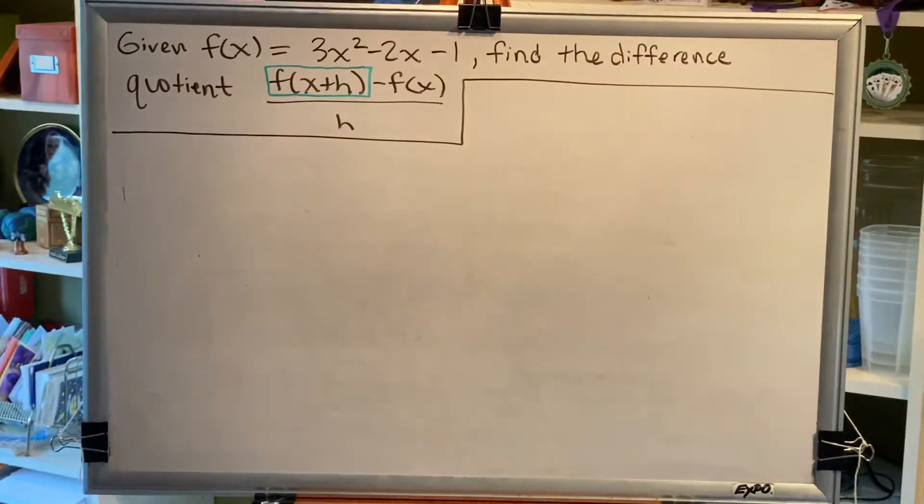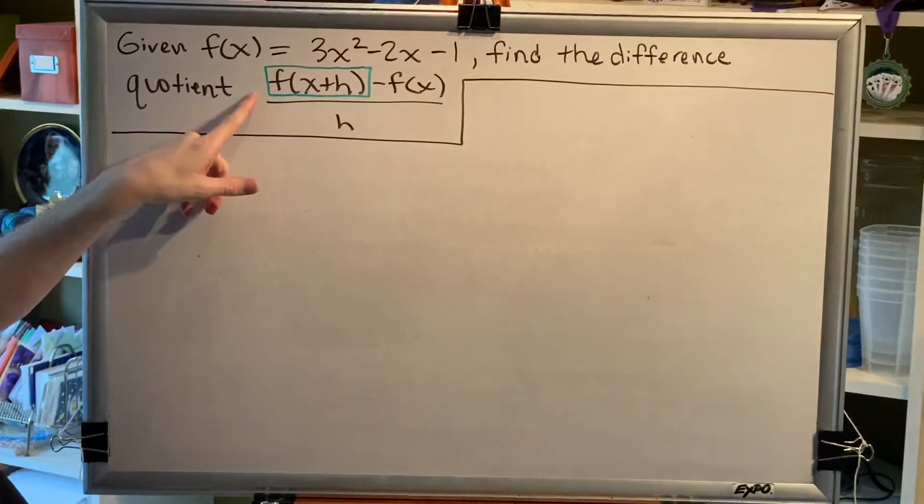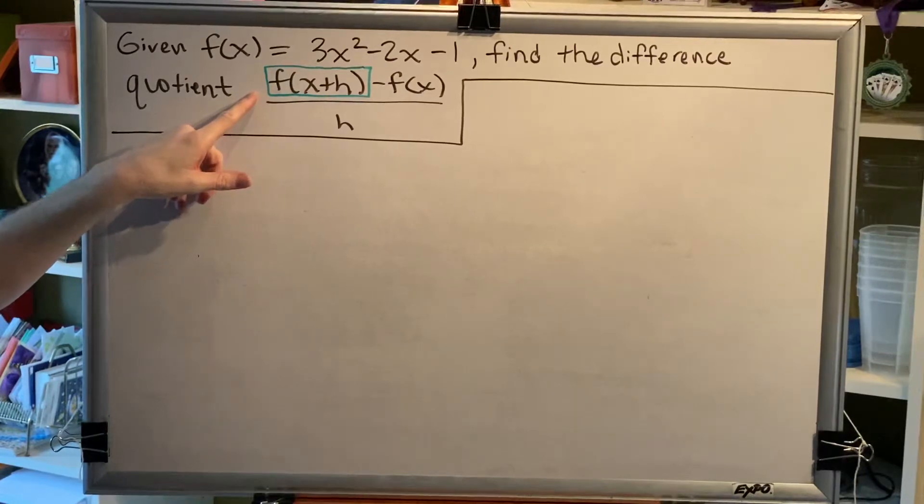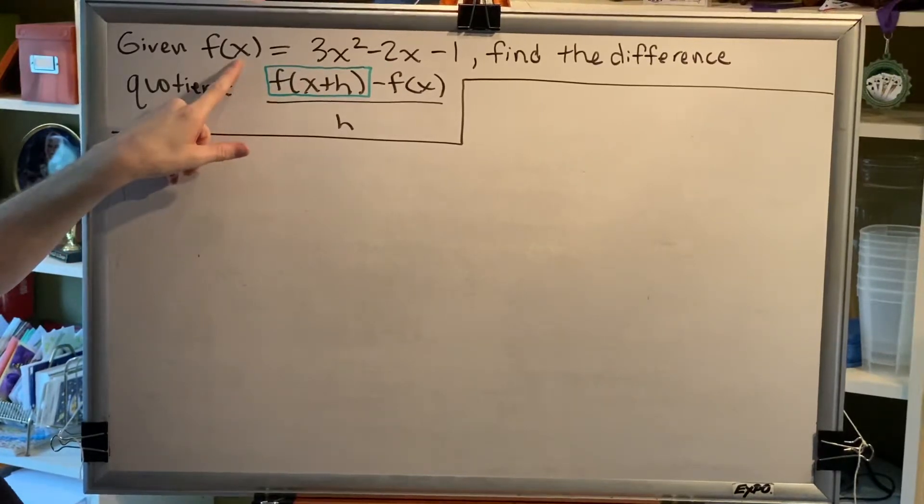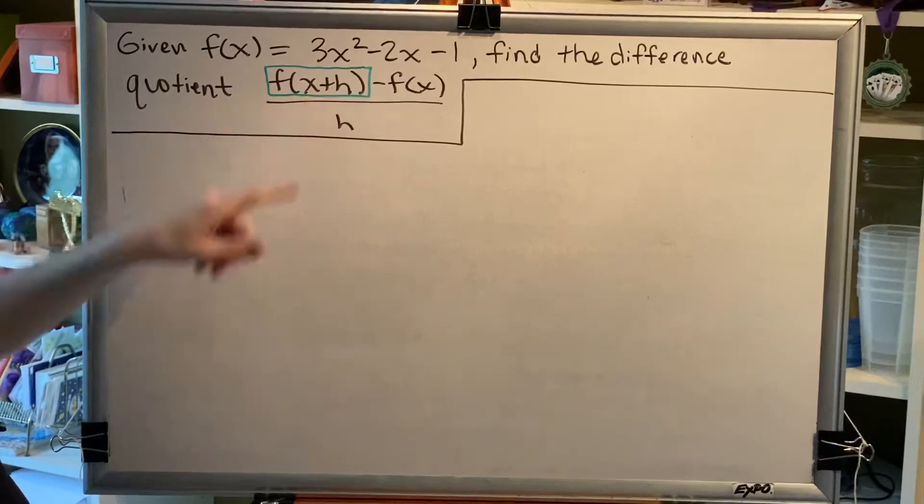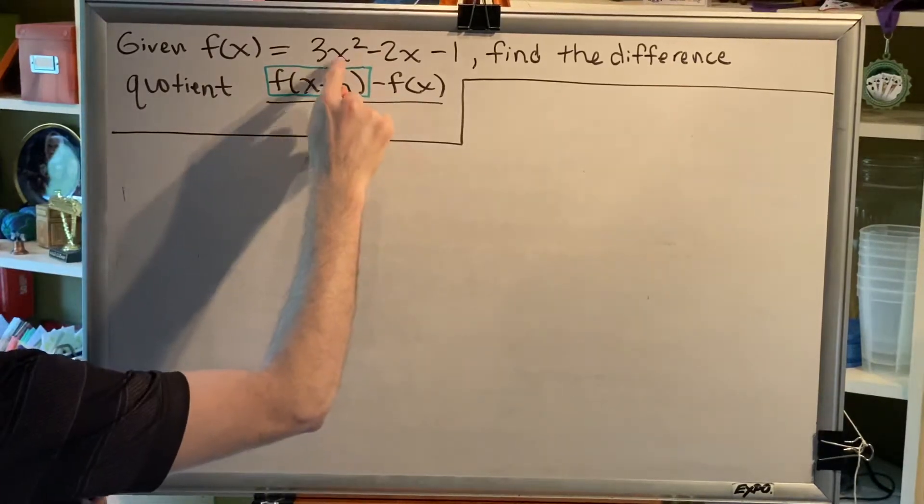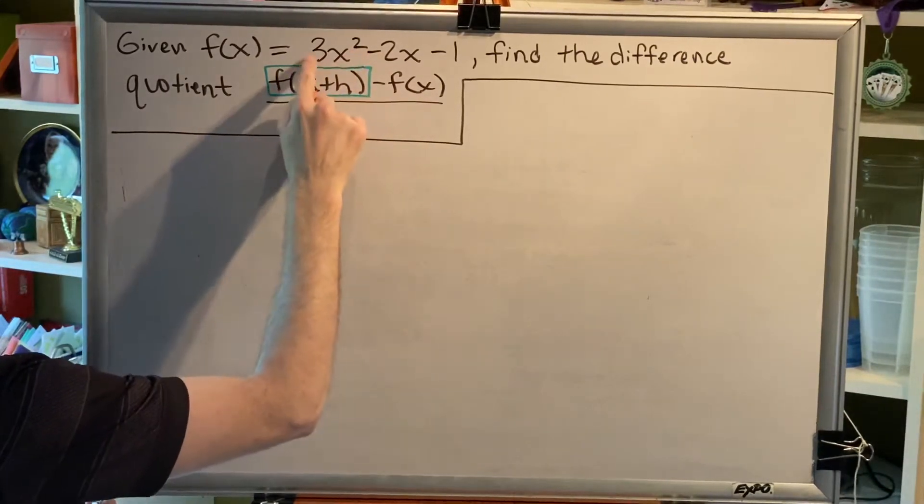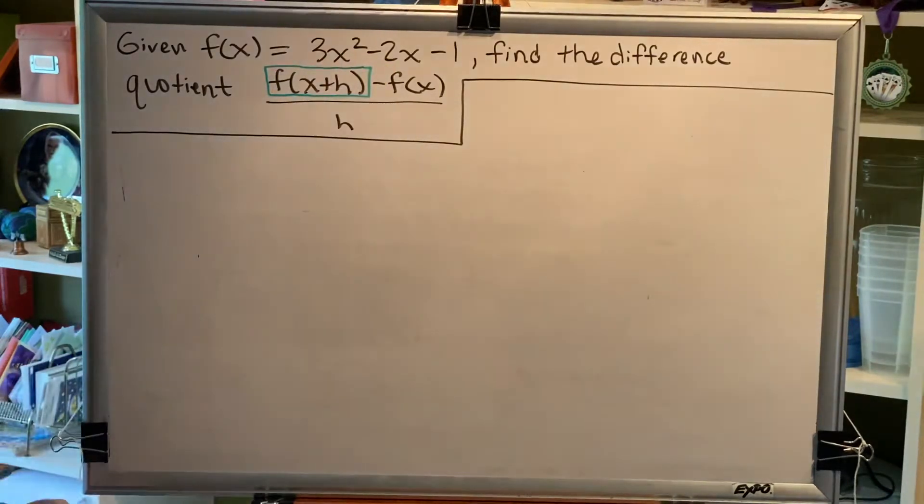Let's focus on the first piece. We're asked to find f of the sum x plus h. This is a skill that we've learned in previous videos. Everywhere we see an x, we replace it with an x plus h. And if the thing we're replacing has an exponent or a multiplier or is being subtracted, then we need to use parentheses.